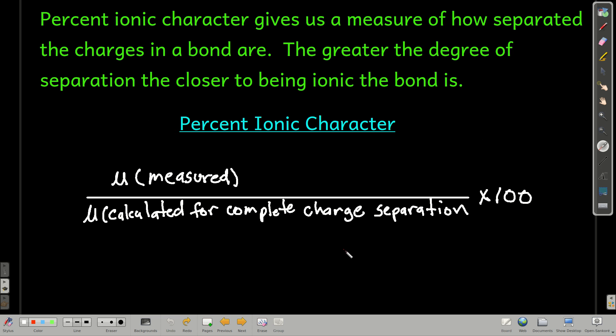All right. So now, percent ionic character. What percent ionic character does is it gives us a measure of how separated the charges in a bond are. The greater this degree of separation or the greater the percent ionic character, the closer that bond is to being truly ionic. A truly ionic bond would be one where the charges are absolutely separated. So the formula, which you should memorize, is the measured dipole moment divided by the dipole moment that you would calculate if those charges were completely separated times 100. So think about that for a minute. This guy up here, we have to do an experiment. So we're going to look it up in the table probably. This we're going to calculate. This is the dipole moment that molecule would have if that electron were entirely removed from the less electronegative atom and entirely on the more electronegative atom.